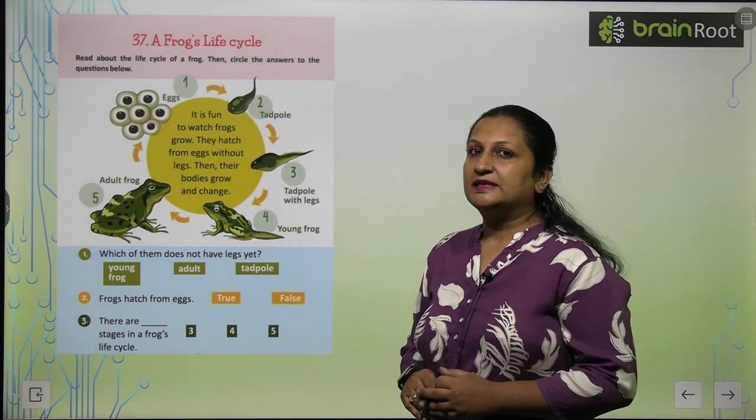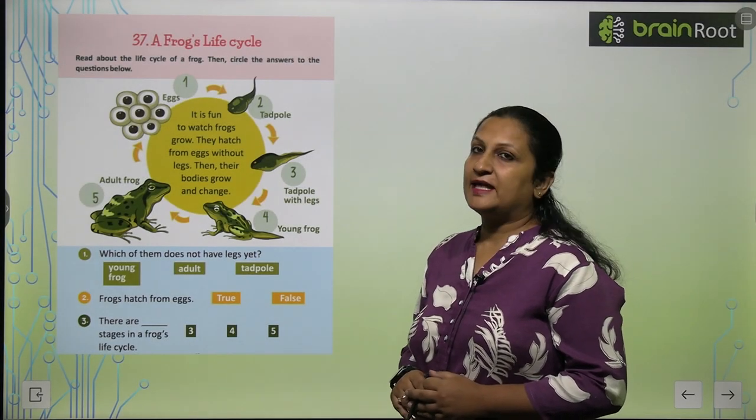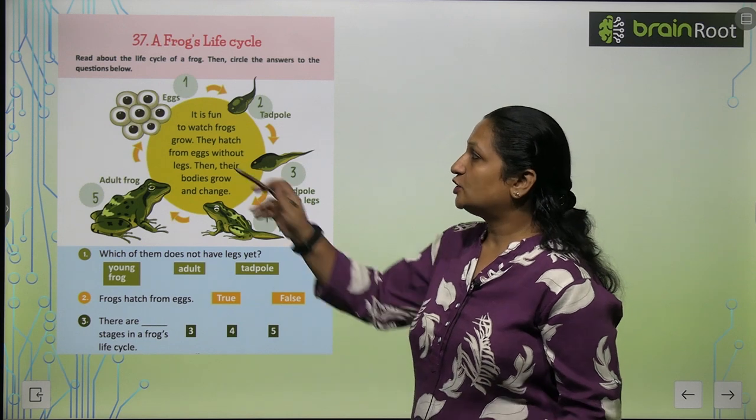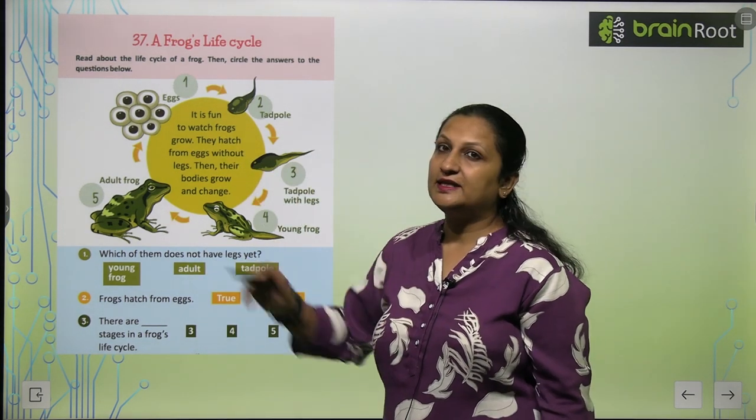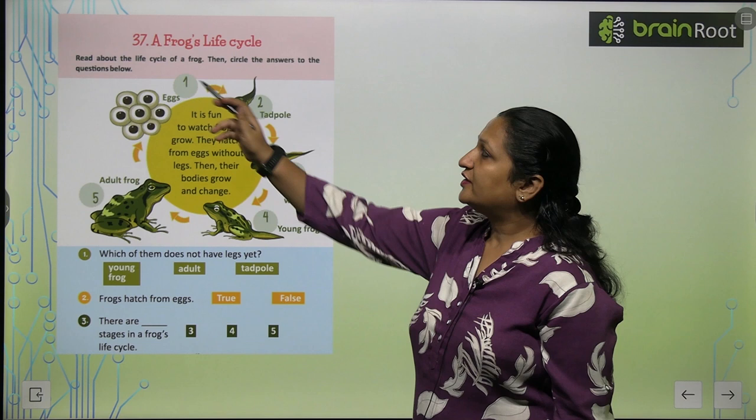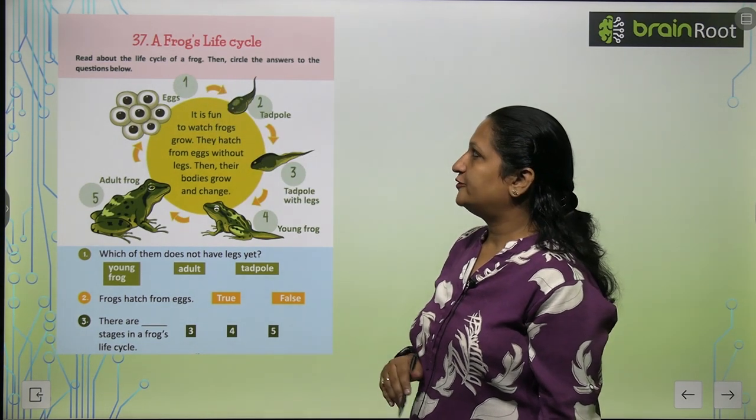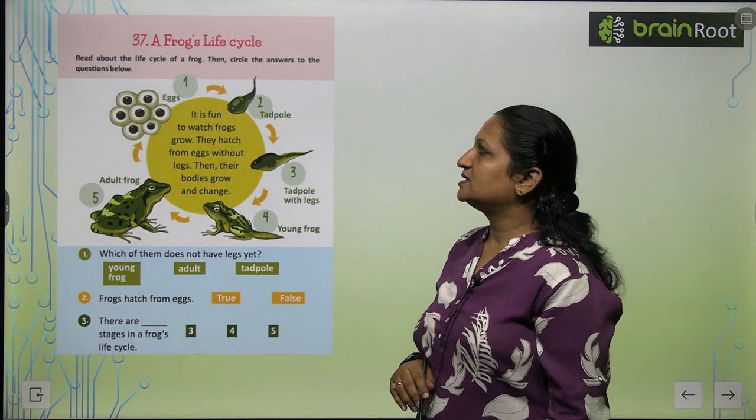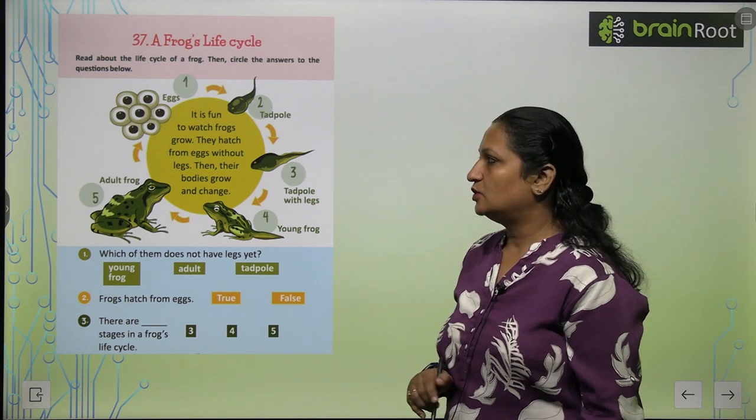Children, let's start with chapter number 37, that is a frog's life cycle. If you can see here, we have a frog's life cycle. Read about the life cycle of a frog, then circle the answers to the questions below.